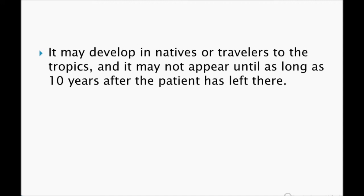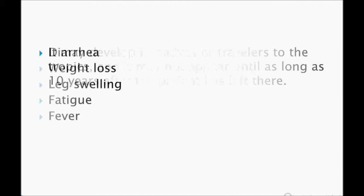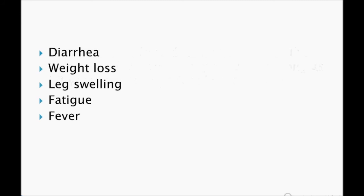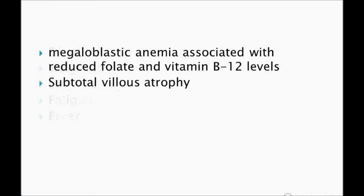The symptoms include diarrhea, weight loss, swelling, fatigue, and fever. Megaloblastic anemia is associated with reduced folate and vitamin B12 deficiency. Remember: if celiac disease is severe, then B12 deficiency may be seen; otherwise B12 deficiency is not typically seen in celiac disease.